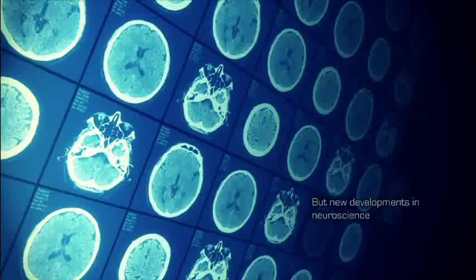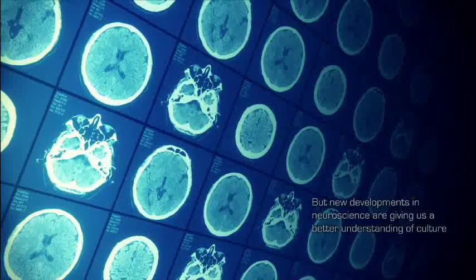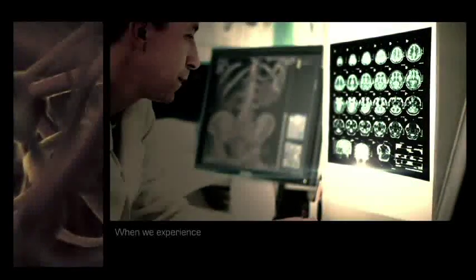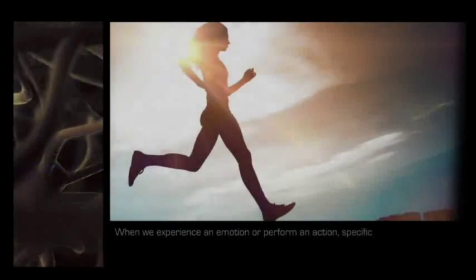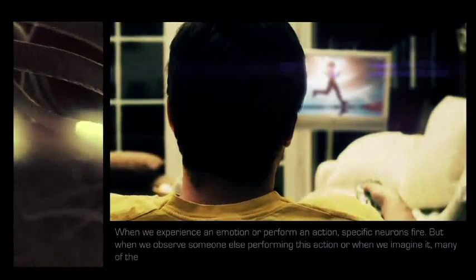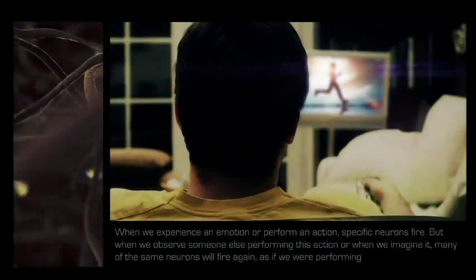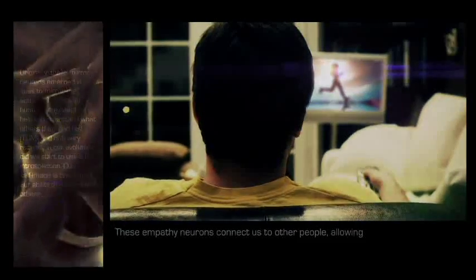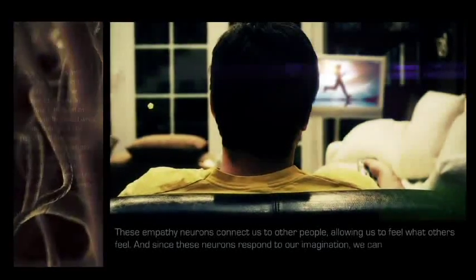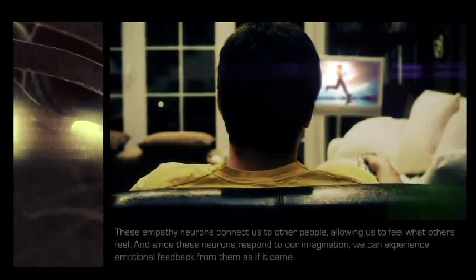New developments in neuroscience are giving us a better understanding of culture and identity. Recent neurological research has confirmed the existence of empathetic mirror neurons. When we experience an emotion or perform an action, specific neurons fire, but when we observe someone else performing this action, or when we imagine it, many of the same neurons will fire again, as if we were performing the action ourselves. These empathy neurons connect us to other people, allowing us to feel what others feel. And since these neurons respond to our imagination, we can experience emotional feedback from them as if it came from someone else. This system is what allows us to self-reflect.